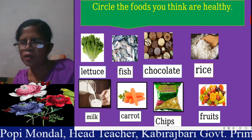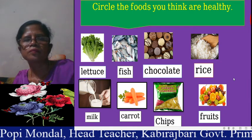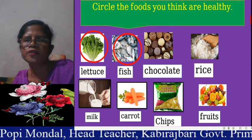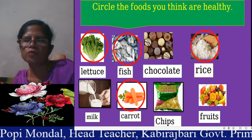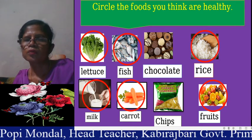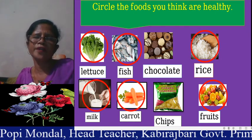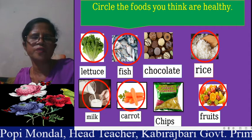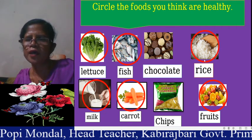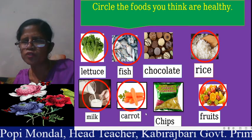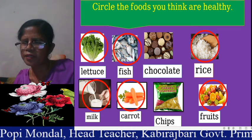They have to take care of whole food. There is a rabbit — lettuce, fish, arms, carrots. Dear students, you find out the healthy food items: lettuce, fish, rice, fruits, carrot, milk. The rest of the foods are unhealthy — chocolate and chips are unhealthy foods.